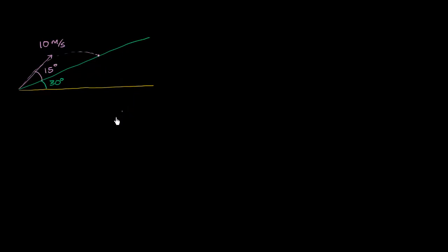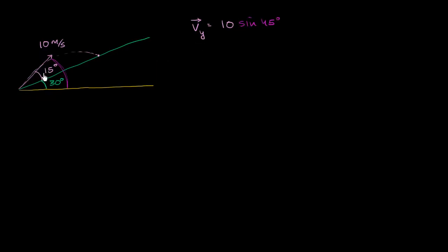As we walk through this, you'll see how that can be done. The first thing we always want to do is break up our velocity into both the horizontal and vertical components. The vertical component of our velocity is going to be the magnitude of our total velocity — 10 meters per second — times, and be very careful here, not the sine of 15 degrees, but the sine of the angle with the horizontal. So times the sine of 45 degrees.